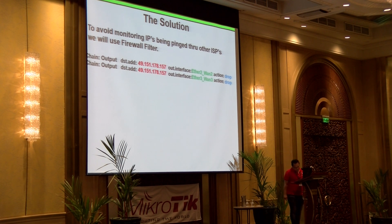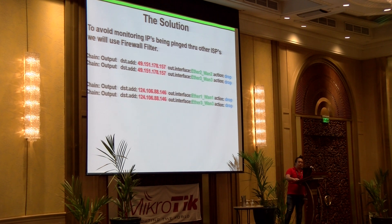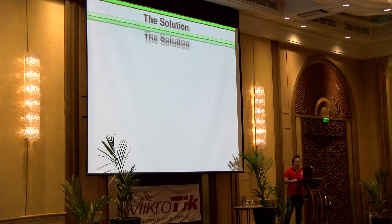This is the first part of the firewall filter. When the destination is 49.151.178 and it's going out of port number two which is ISP2, the action is to drop it. When it goes out of ISP3, drop it. Same thing for 124: when it goes out of ISP1, drop it; ISP3, drop it. And for 121, which is assigned for ISP3, when it goes out of ISP1, drop it; ISP2, drop it.